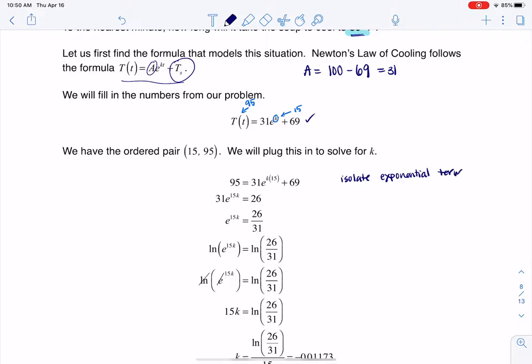Because my variable, the one I want to solve for k, is up in an exponent, I need to get that exponential term all by itself. And right now it's got a plus 69 with it and a multiply by 31. So I need to undo that. So I'm going to subtract 69 from both sides, then I'm going to divide by 31, and that gets me here.